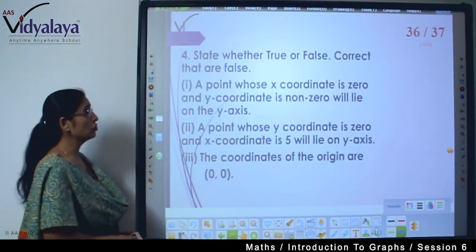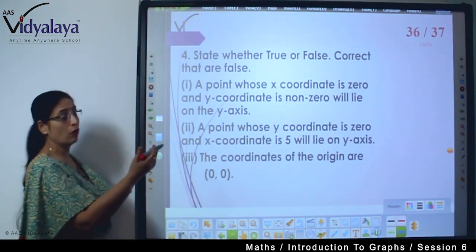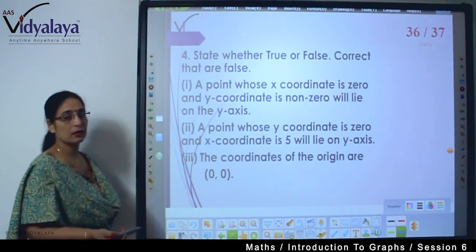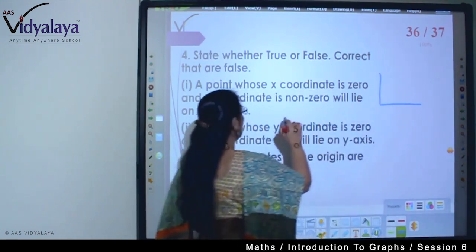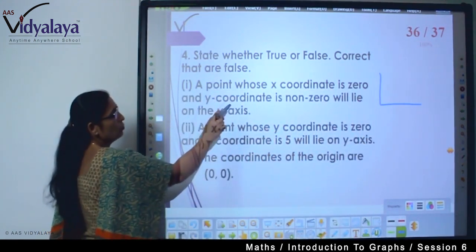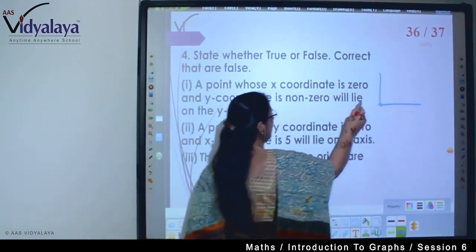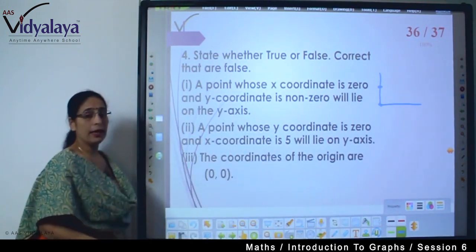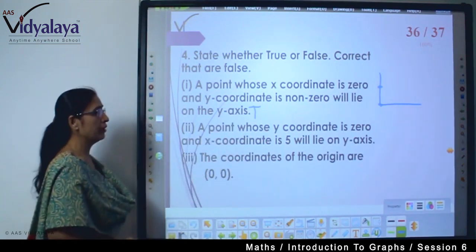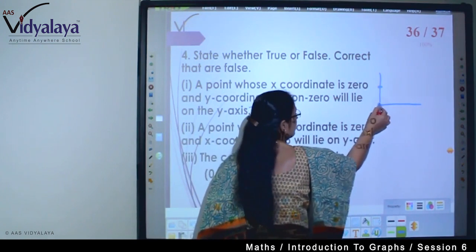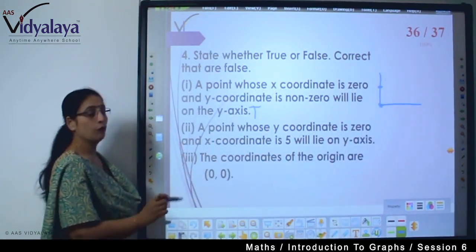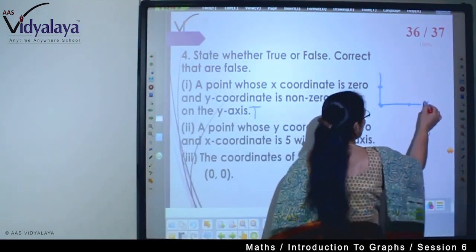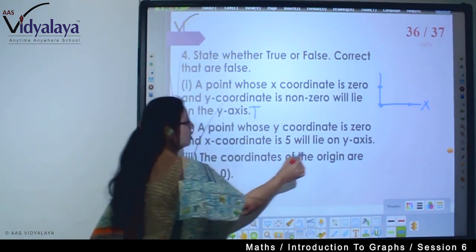State whether true or false. A point whose x-coordinate is zero and y-coordinate is non-zero will lie on the y-axis. If x-coordinate is zero and y-coordinate is non-zero, it will come somewhere on the y-axis. This is true. A point whose y-coordinate is zero and x-coordinate is five will lie on y-axis. No, this is false because this will lie on the x-axis.